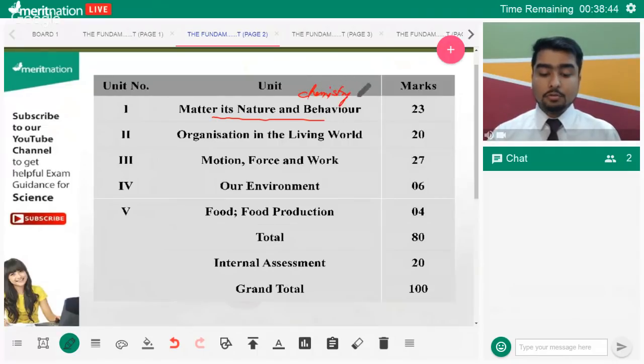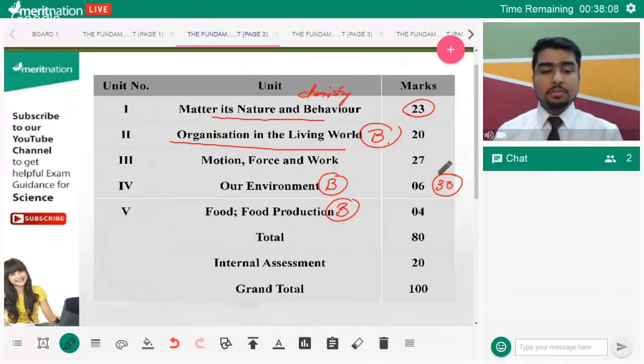Matter, its nature and behavior, that's chemistry, 23 marks. Your chemistry teacher will tell you more about that. Organization in the living world, that's biology, 20 marks. Motion, force and work, that's physics, 27 marks. Our environment is biology, food and food production is biology. So the total paper out of 80, there are 30 marks from the biology section.